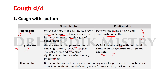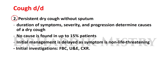Other conditions presenting with cough with sputum include bronchoalveolar cell carcinoma, pulmonary alveolar proteinosis, and bronchiectasis associated with immunodeficiency states or primary ciliary dyskinesia. Turning now to persistent dry cough without sputum: the duration, severity, and progression of symptoms help determine the cause. In around 15% of patients, no cause can be found. Initial investigations include full blood count, urine and electrolytes, and chest X-ray.